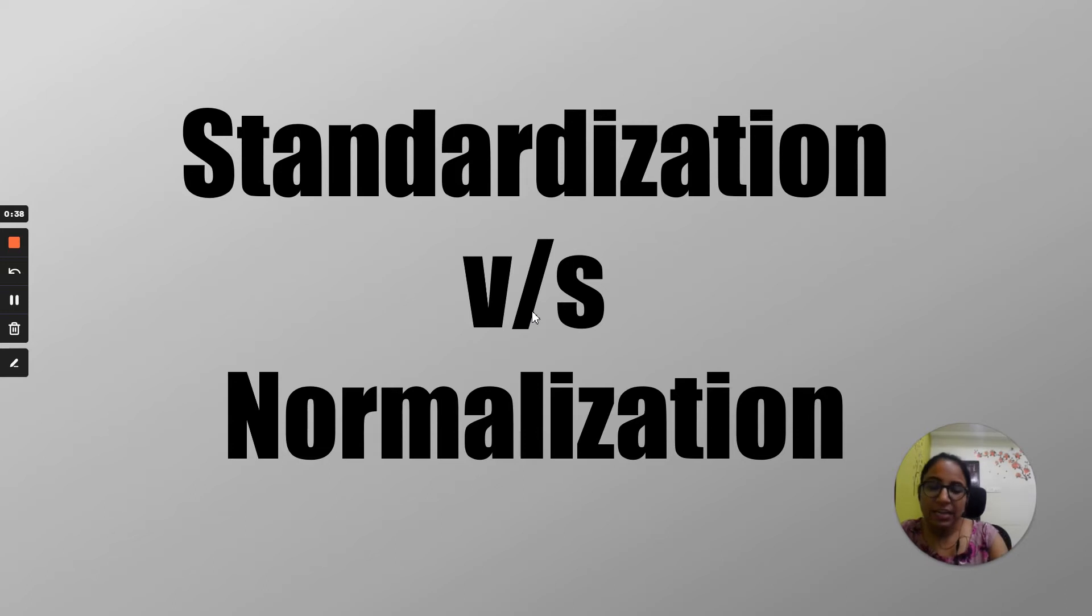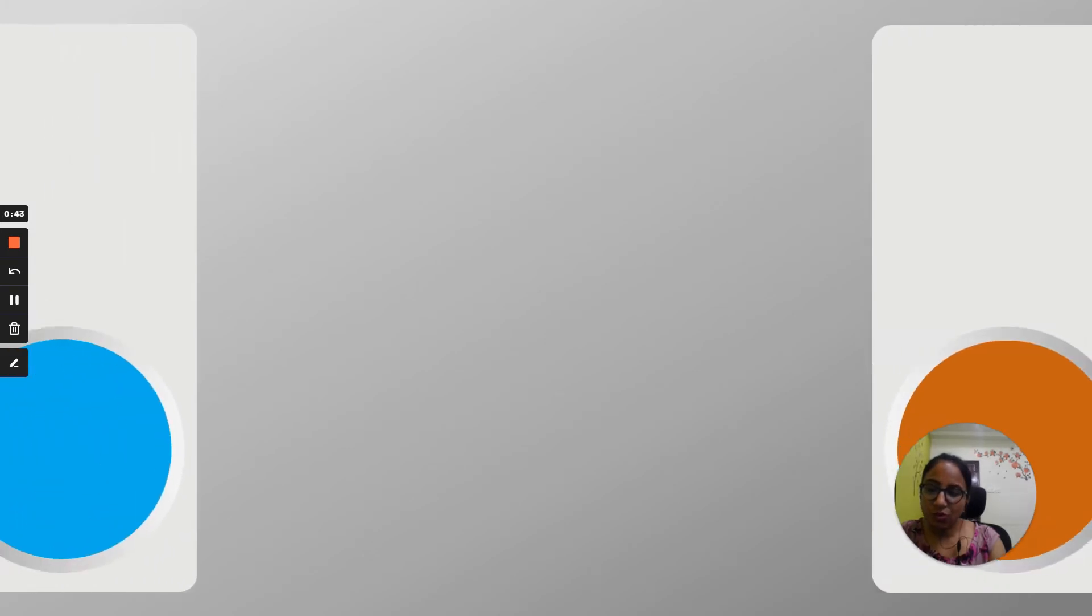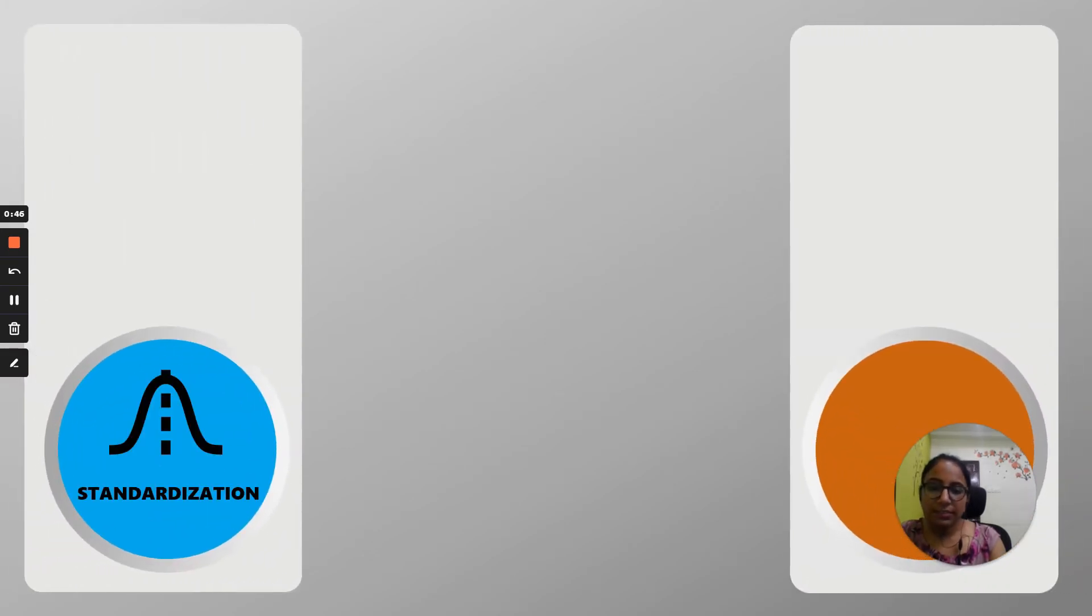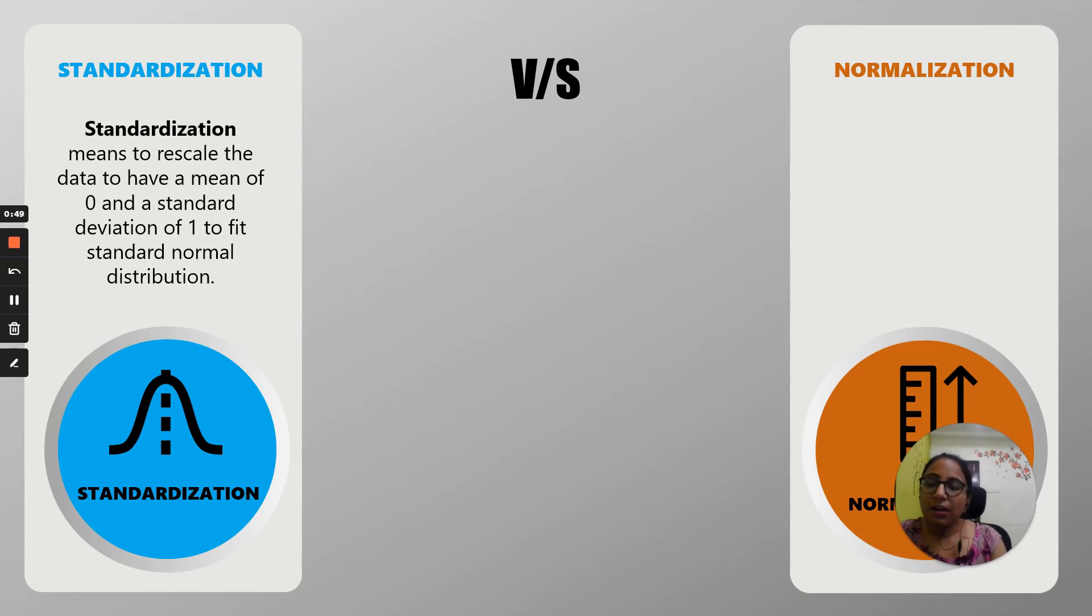So let's see the difference between them. What is standardization? Standardization basically means to rescale the data to have a mean of zero and standard deviation of one to fit in a standard normal distribution, because any standard normal distribution will have a mean of zero and standard deviation of one.